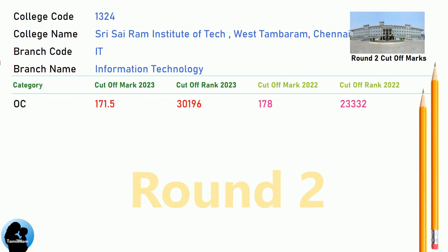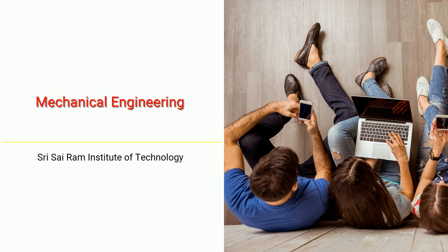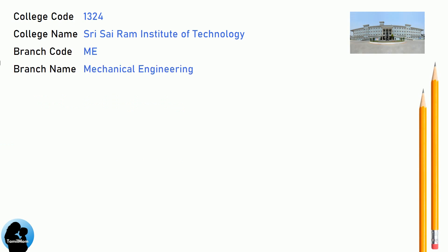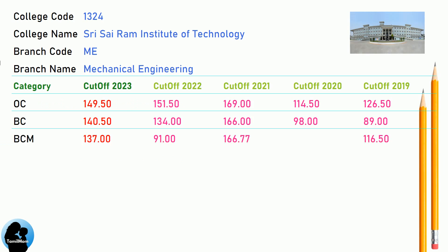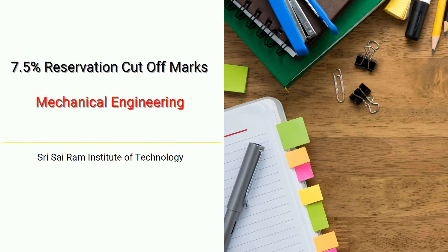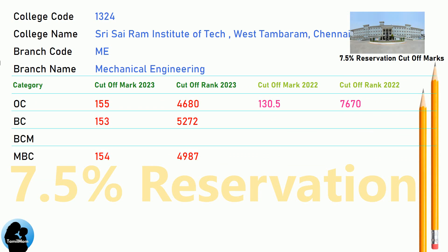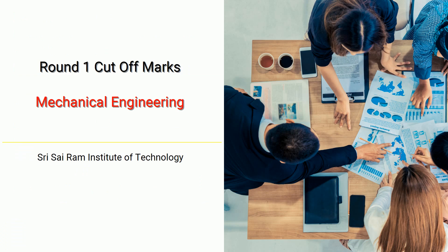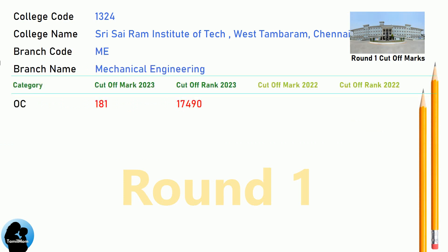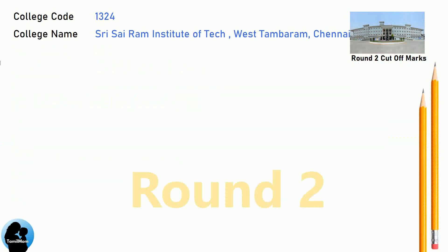BNA Cut-Off for Sri Sai Ram Institute of Technology in Mechanical Engineering. DNA 7.5 Reservation Cut-Off for Sri Sai Ram Institute of Technology in Mechanical Engineering. DNA Round 1 Cut-Off and DNA Round 2 Cut-Off for Sri Sai Ram Institute of Technology in Mechanical Engineering.